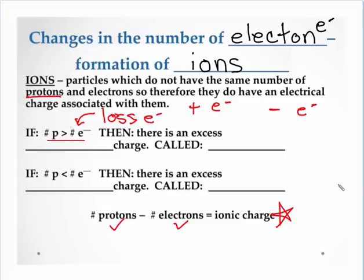So that's loss of electrons. And there is going to be an excess positive charge. So we have a positively charged ion when we lose electrons. And we call that a cation.